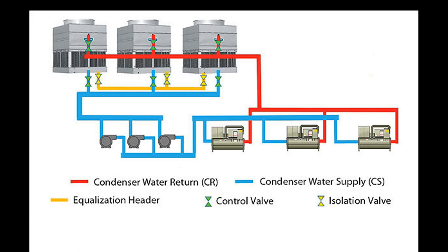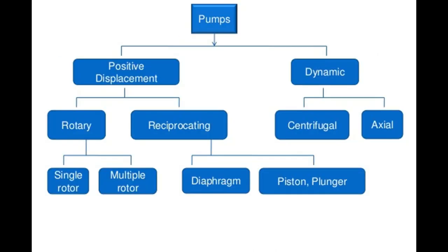Condenser water pumps are used for supplying condenser heated water to the cooling tower and returning cooled water to the condenser. A pump is a machine used to move liquid through a piping system and raise the pressure of the liquid — a hydraulic machine that converts mechanical energy into hydraulic energy. Pumps can be classified into three major groups according to the method they use to move fluid: direct lift, displacement, and gravity pump.